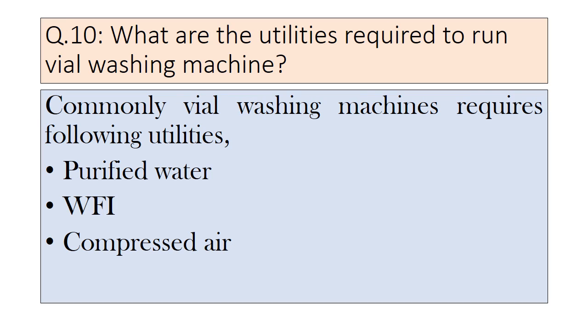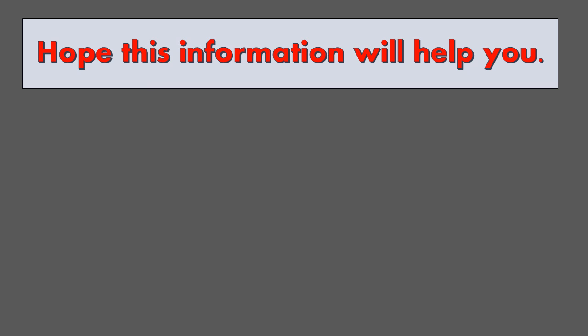Finally, the last question: what are the utilities required to run a vial washing machine? A vial washing machine commonly requires three utilities: purified water, WFI, and compressed air. Hope this information will help you — subscribe to the channel for more useful content.